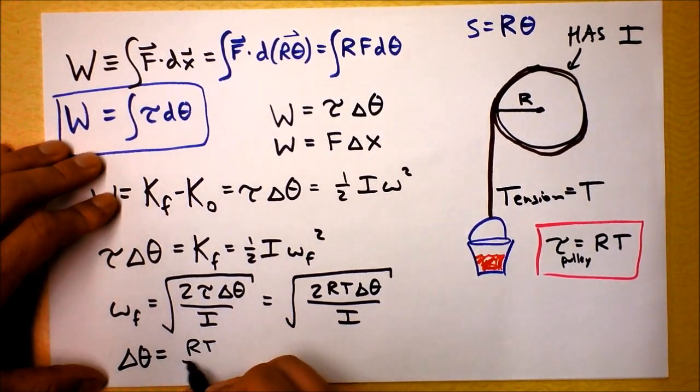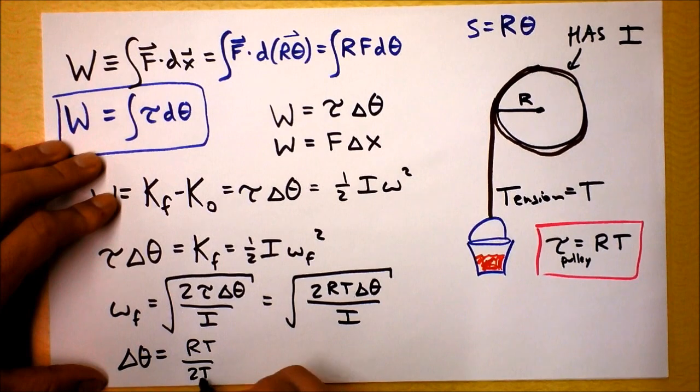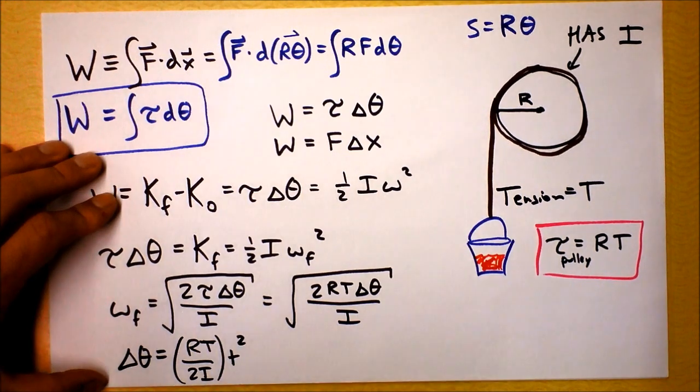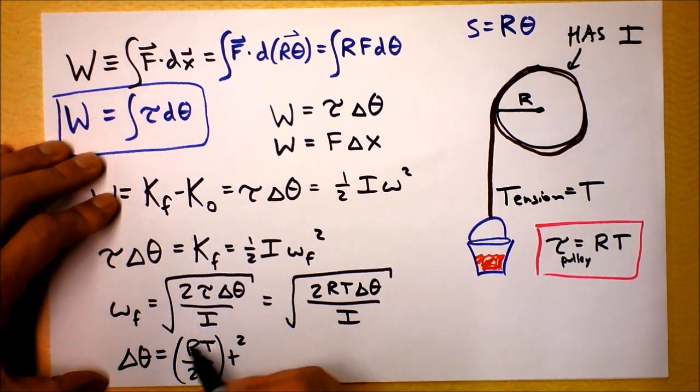This is how far the wheel will have turned. It's going to be R times T over two times I, this quantity multiplied by the time it's been spinning squared.